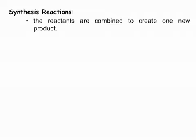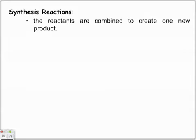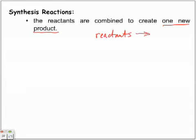Synthesis reactions are one of the simplest to identify, and the reason is because you have two or more reactants that combine to form one new product — and that's really the key. What you're looking for is on the product side. Remember, we have reactants in a chemical equation that produces some kind of a product. So we have two or more reactants that will form only one product in the end, and that's a synthesis reaction.